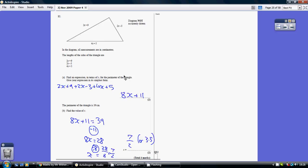Find an expression in terms of x for the perimeter of the triangle. Now what does perimeter mean? That's the length all the way around. So how do you work out the length all the way around? Well, you add up all the sides. So okay, it's algebra, but nonetheless we've just got to add up these three sides.